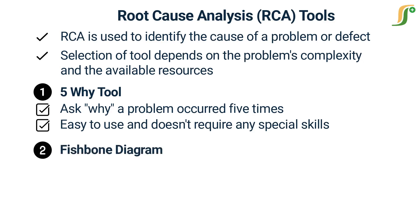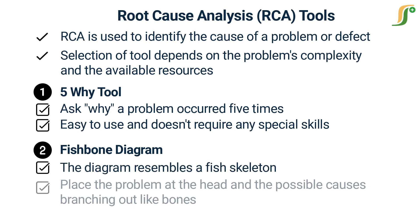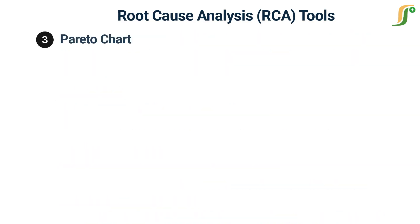The fishbone diagram, also known as the Ishikawa diagram, is a visual tool used to identify the possible causes of a problem. The diagram resembles a fish skeleton with the problem at the head and the possible causes branching out like bones. This tool is particularly useful when there are multiple potential causes of a problem.